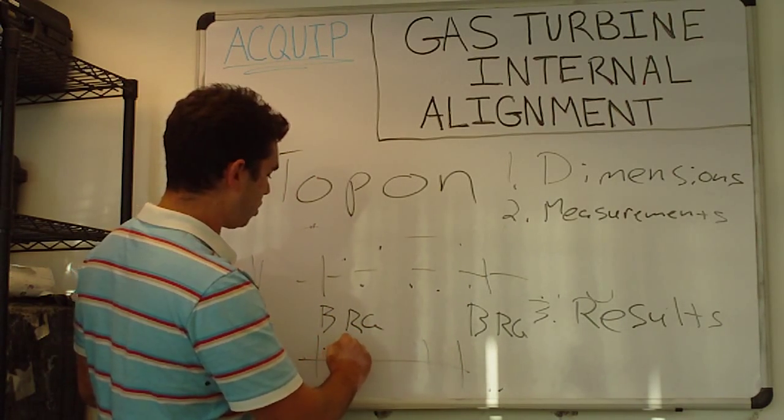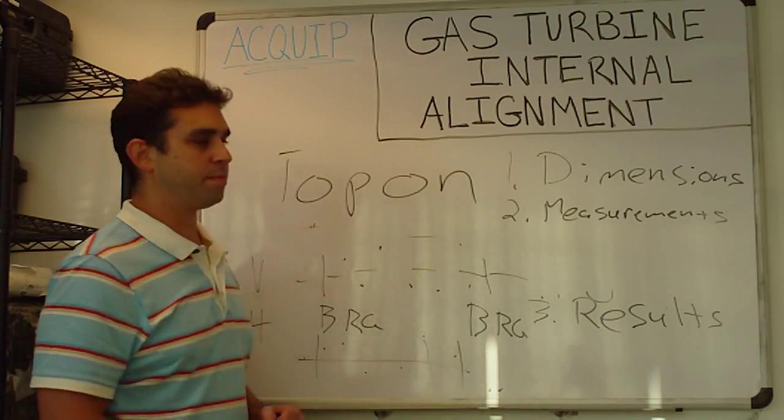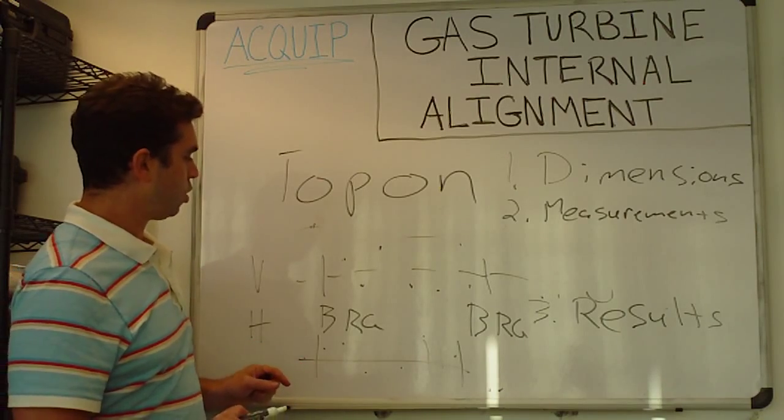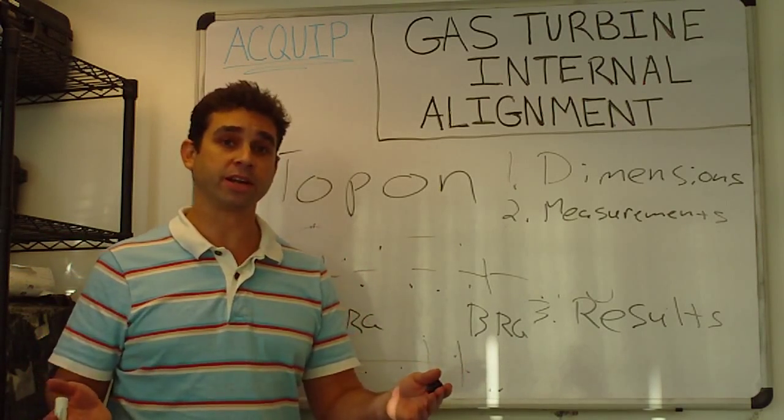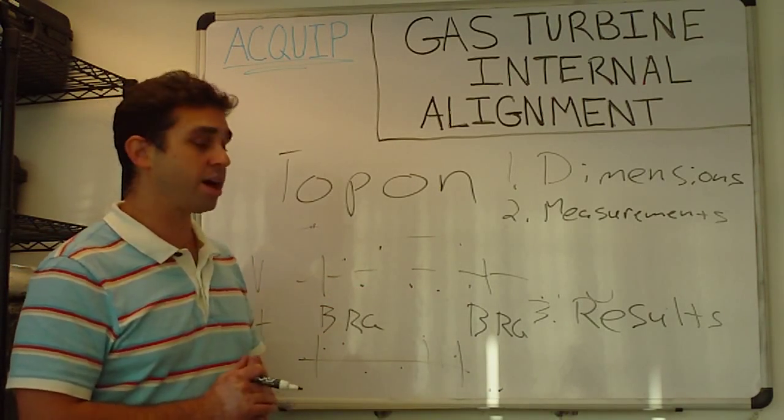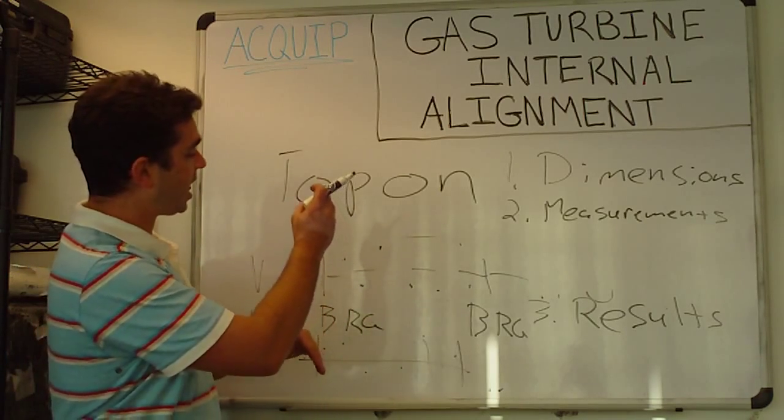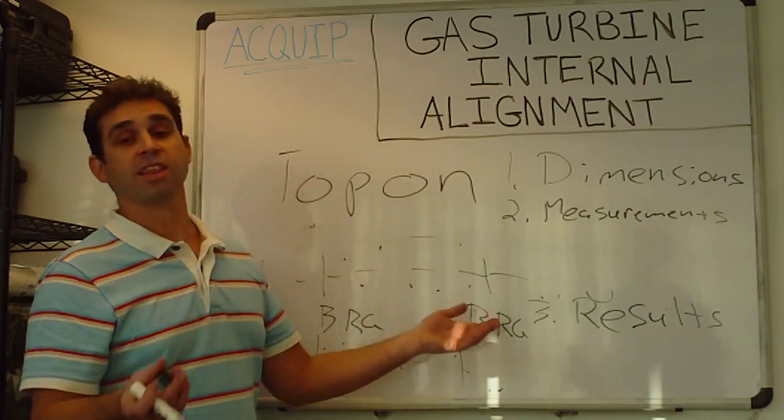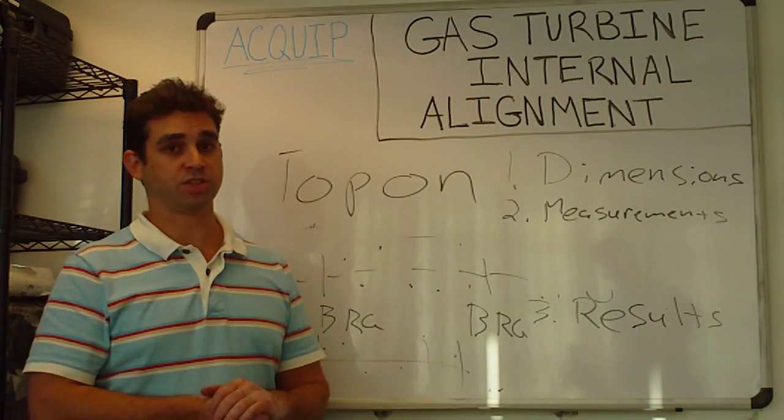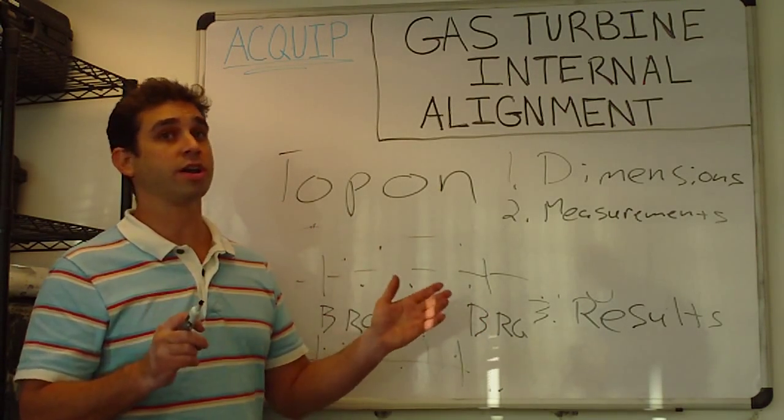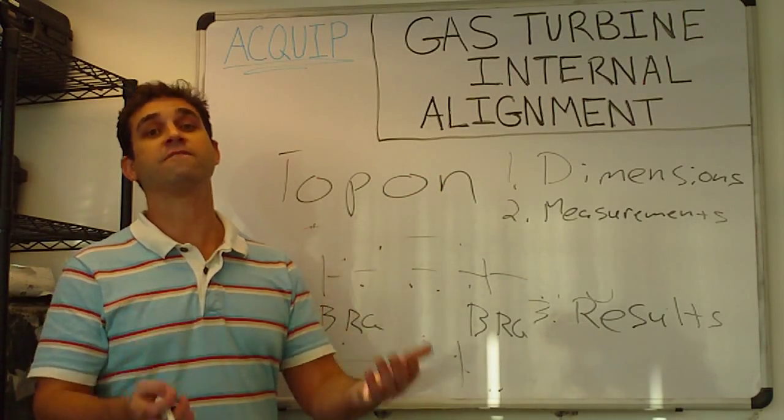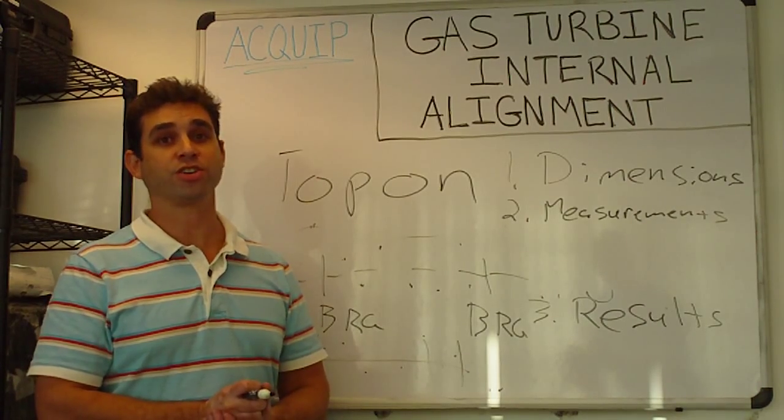And then we can make our alignment moves based on this set point, whether it be moving a bearing or moving one of the other internal components by sliding them on each other. There's a lot that goes into doing this gas turbine internal alignment, but as long as you follow these steps, you're going to be able to do a very good internal alignment on your gas turbine.